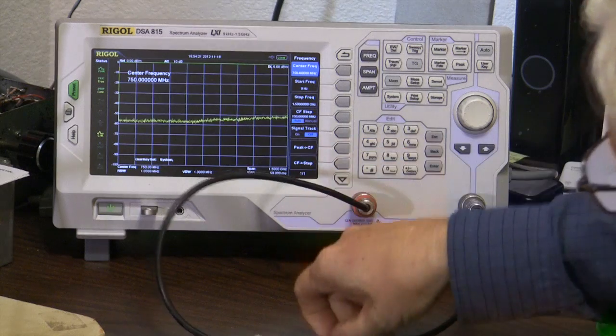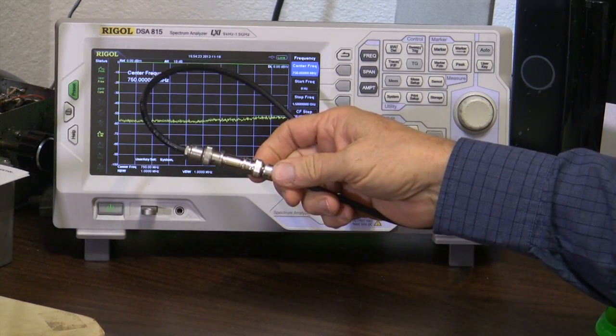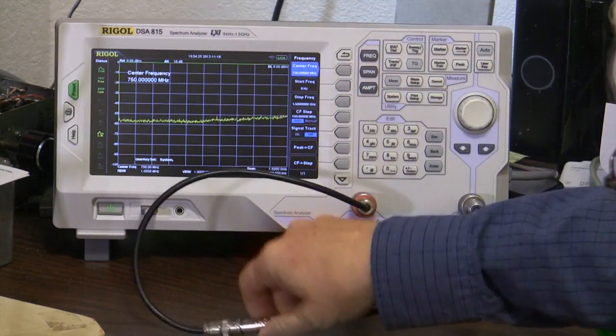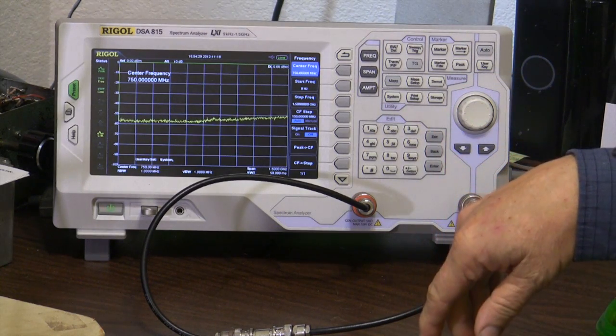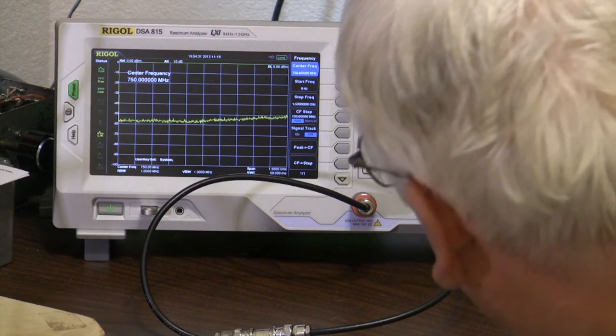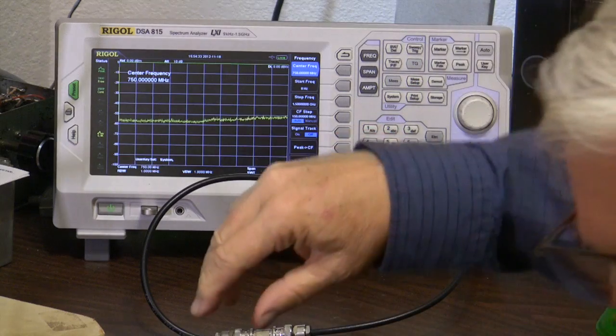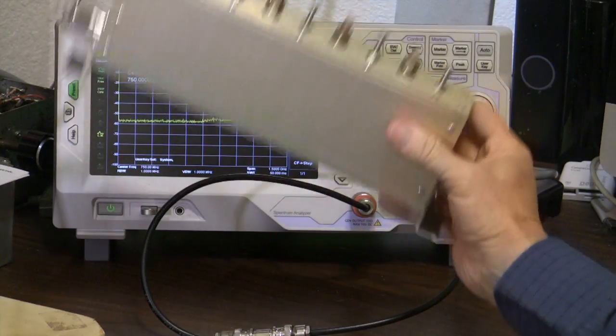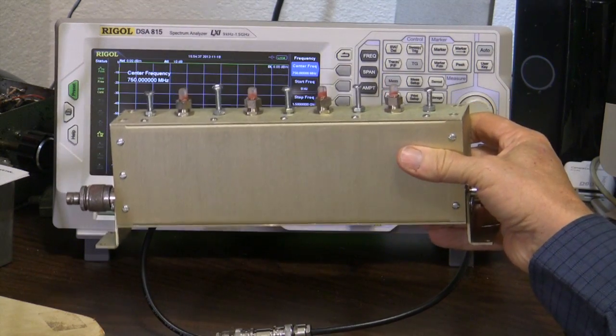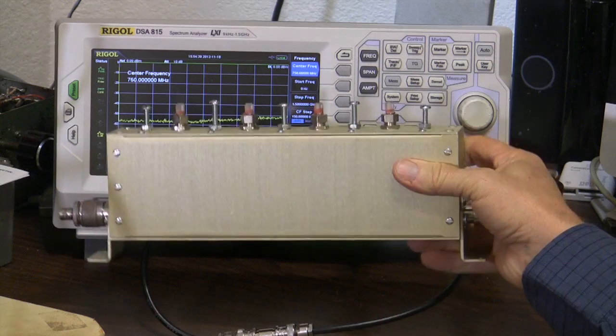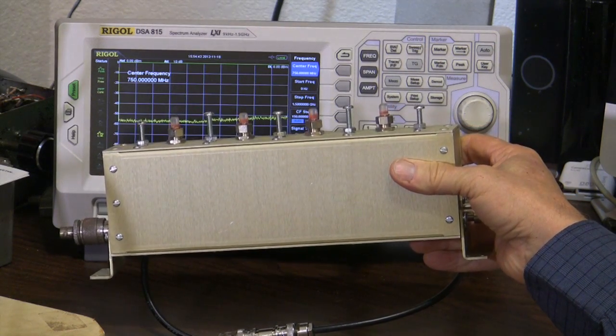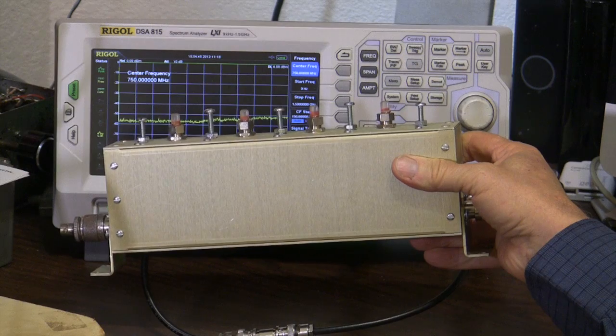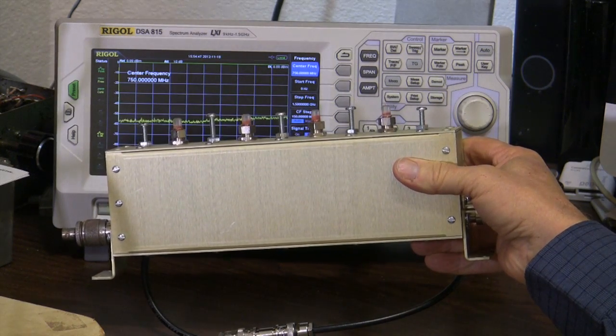We start out by doing our usual and setting up a cable from the tracking generator to the spectrum analyzer input. And first thing I'm going to do, I know for a fact that this is at 169 plus or minus megahertz.